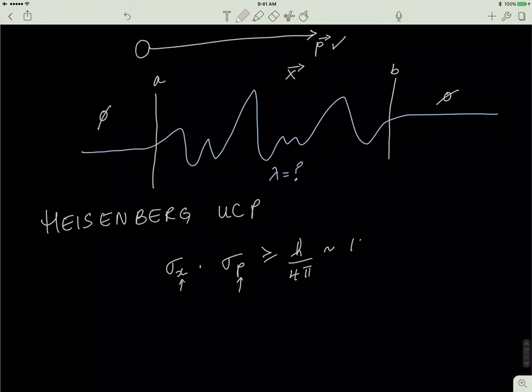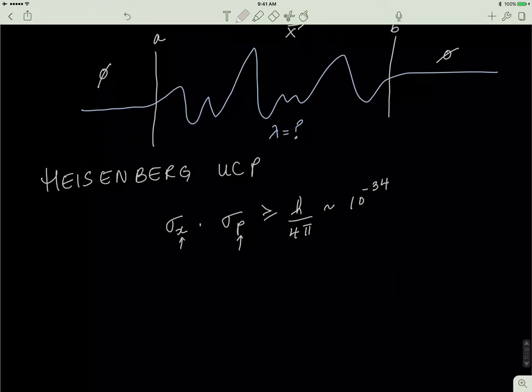Or basically to the order of 10 to the minus 34, because if you divide h by 4 pi, it's not a huge difference. H is equal to 6.626 times 10 to the minus 34. You divide that by a number close to 20 and it's not going to make a huge difference. The point is that this relationship has to be greater than or equal to 10 to the minus 34. What it means is if one of these has a high value, then to maintain this relationship the other one has to have a low value.